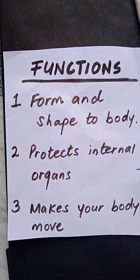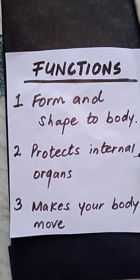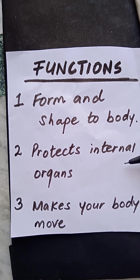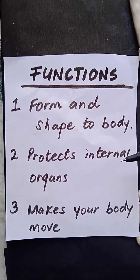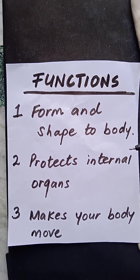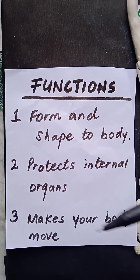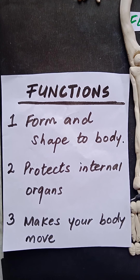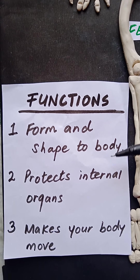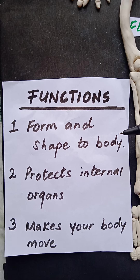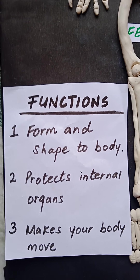The second important function of the human skeleton system is that it protects our internal organs. The skull protects the brain, the rib cage protects the lungs and heart, and of course it also makes our body move with the help of muscles. So these are the main three functions of our human skeleton system.